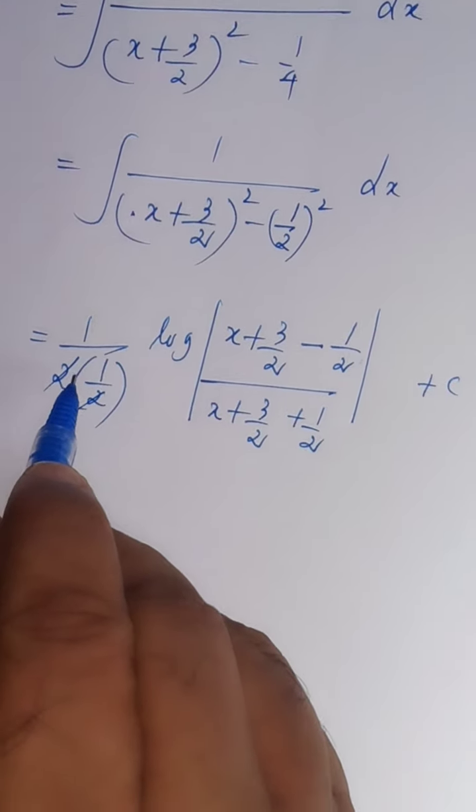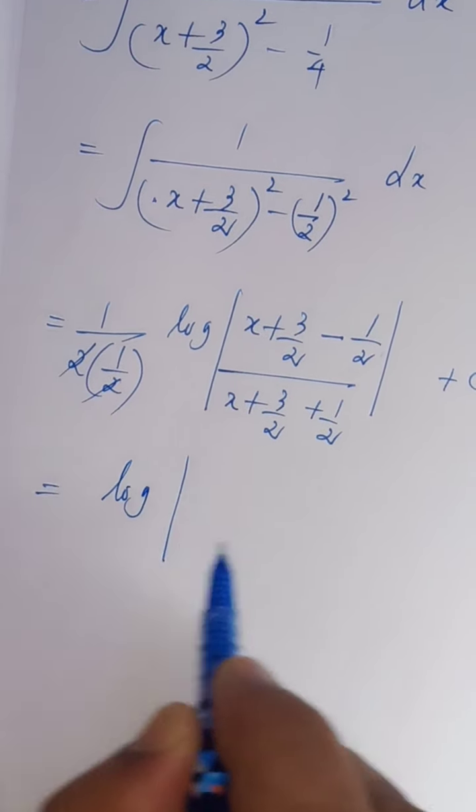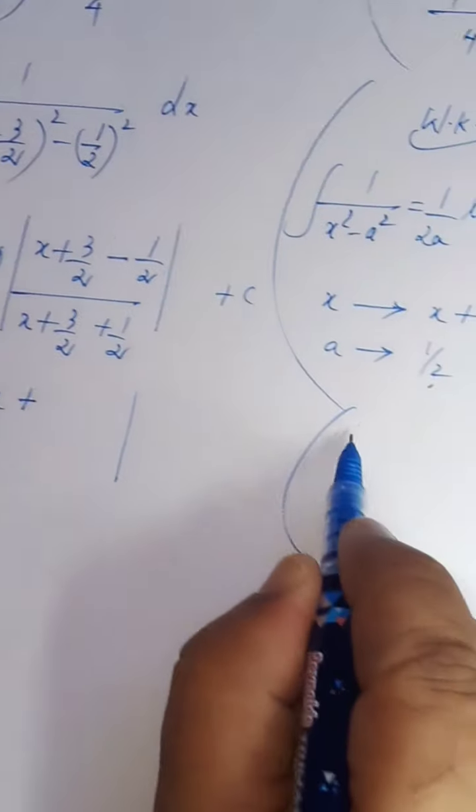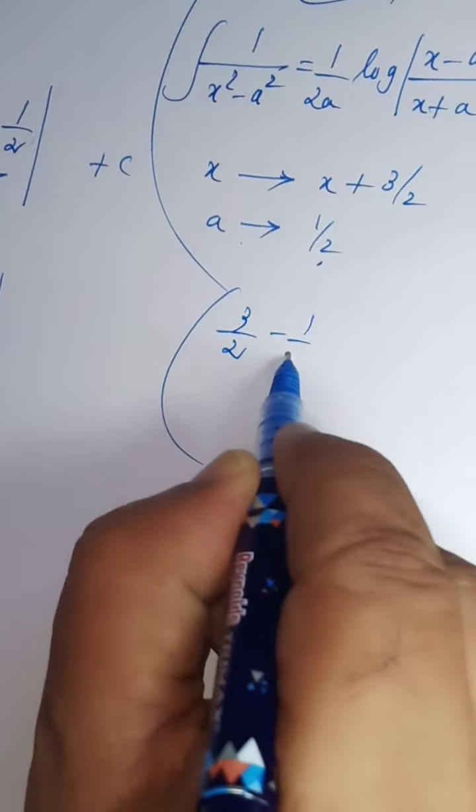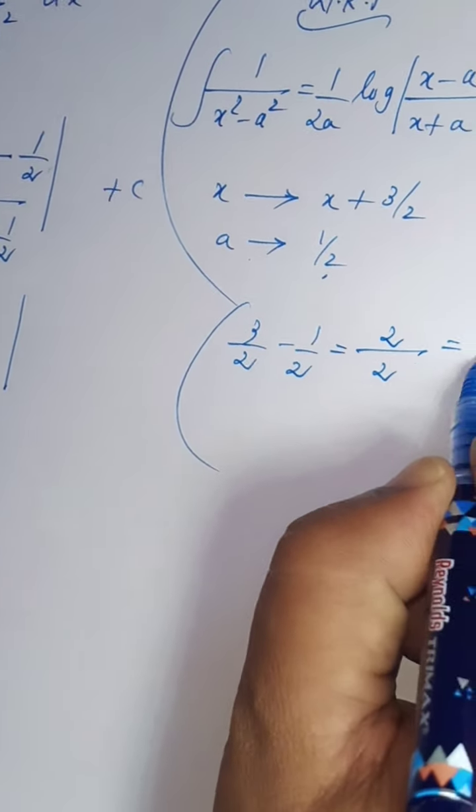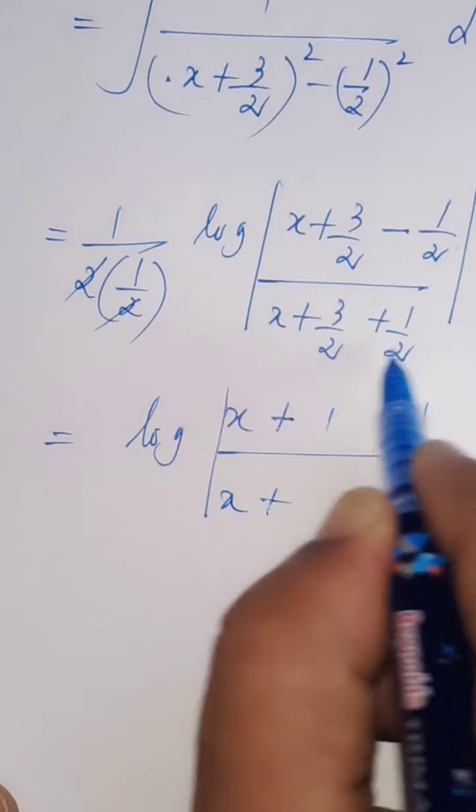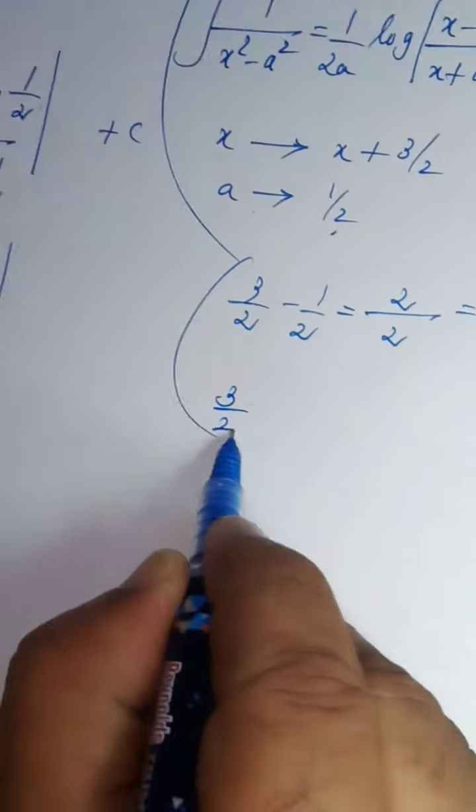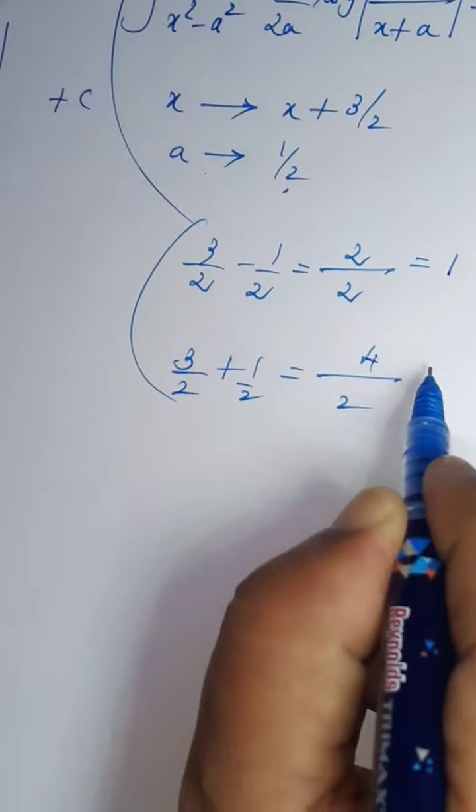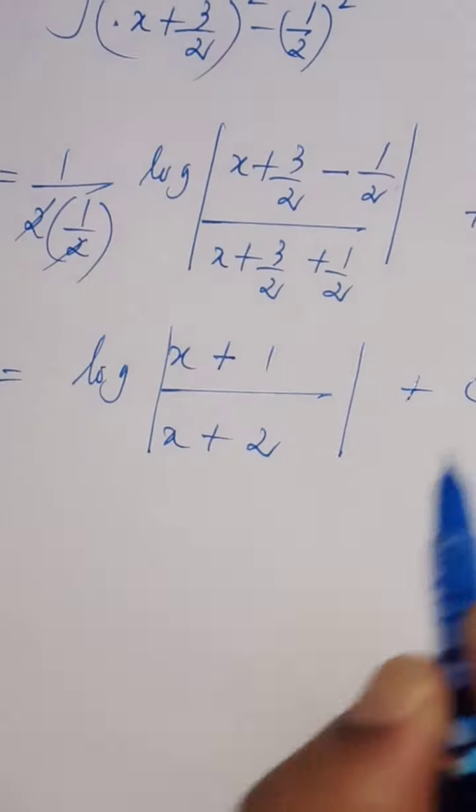1 by 1 that is equal to 1. 1 into anything is same thing. So straight away I can write log of modulus of x plus 3 by 2 minus 1 by 2. I write here 3 by 2 minus 1 by 2, that is equal to 2 is common, 3 minus 1 equals to 2 by 2 equals 1. So plus 1 divided by x plus 3 by 2 plus 1 by 2. 3 by 2 plus 1 by 2 that is equal to 2 is common, 3 plus 1 equals 4, 4 by 2 equals 2 plus 2.